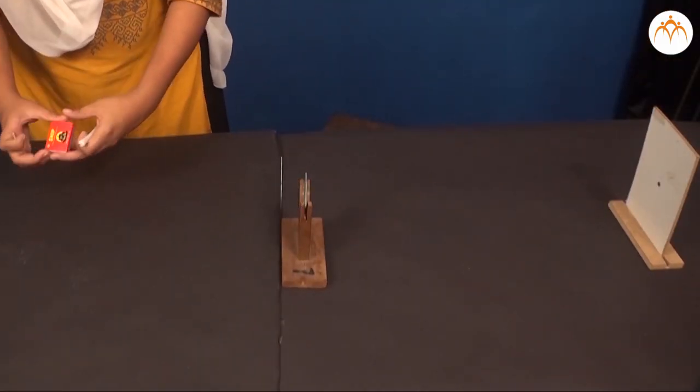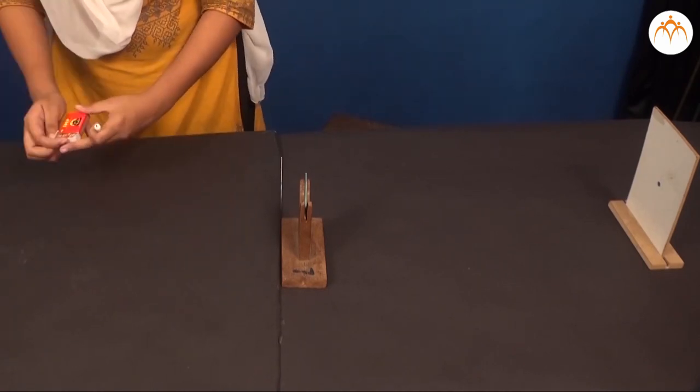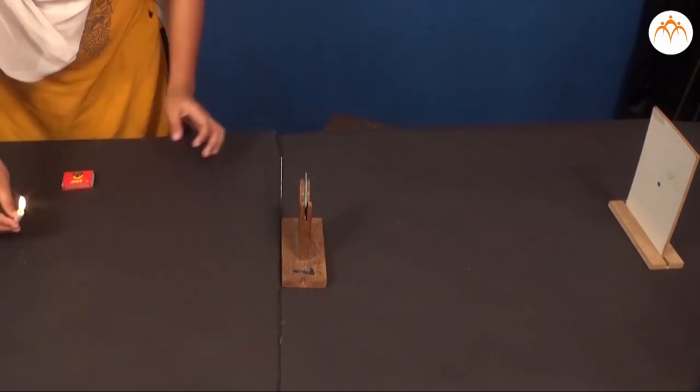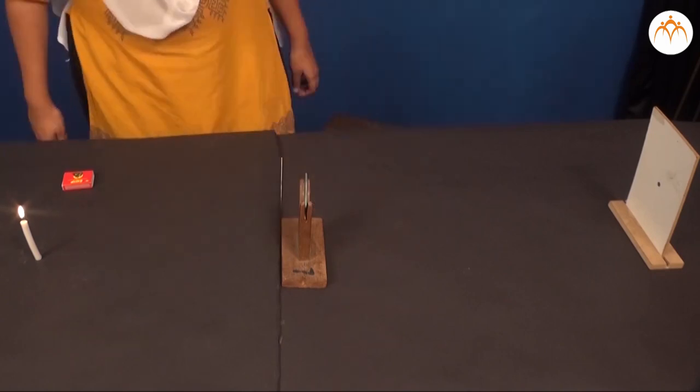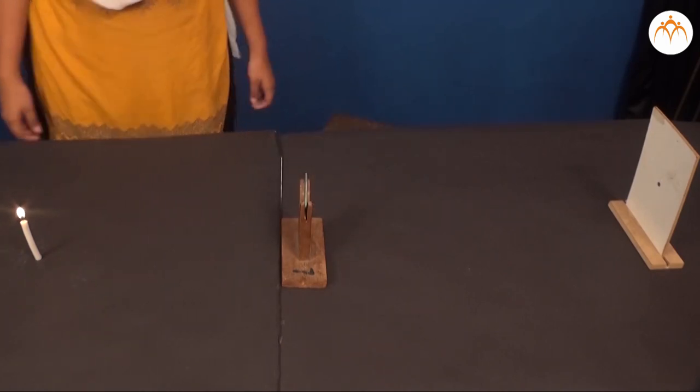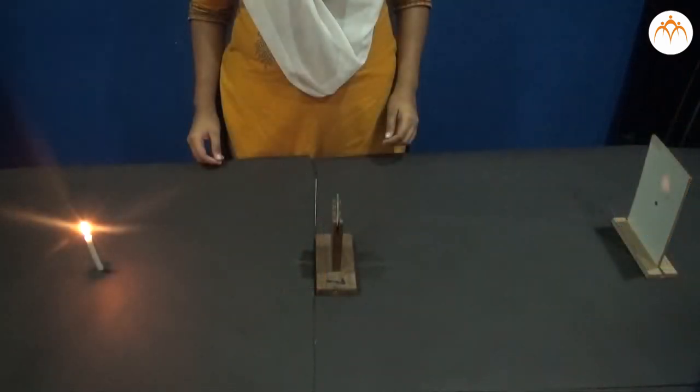Arrange the lens so that rays from infinity fall on the lens. Adjust the screen position so that you get a clear image of the far away object on the screen. As it is a real image, it is inverted and can be captured on the screen.